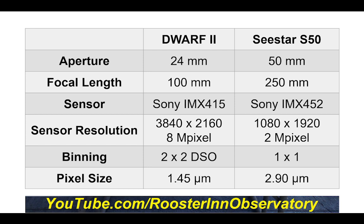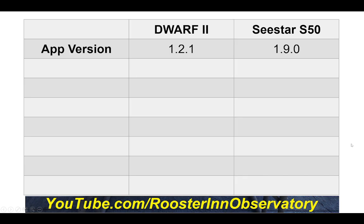Pixel size is the equalizer: 1.45 versus 2.9. So if you go with 2x2 binning, the sensors become essentially identical in terms of light capturing and resolution. The app versions I tested are 1.21 for the Dwarf and 1.90 for the Sea Star — these are the two publicly available apps now.